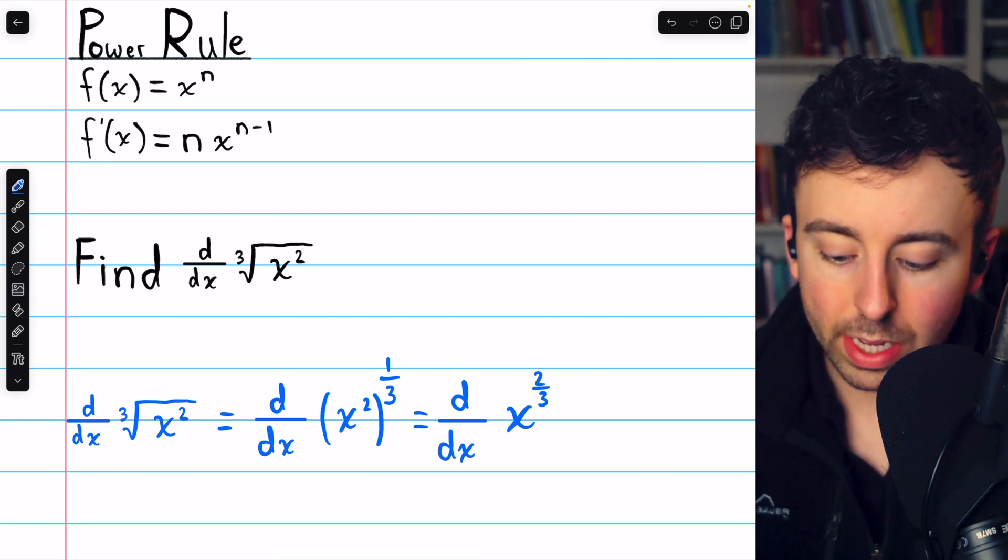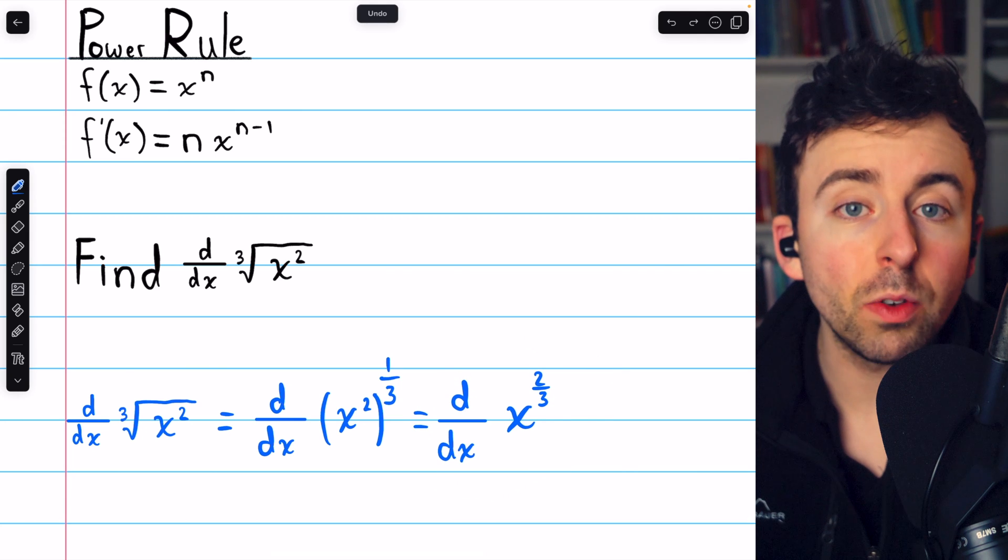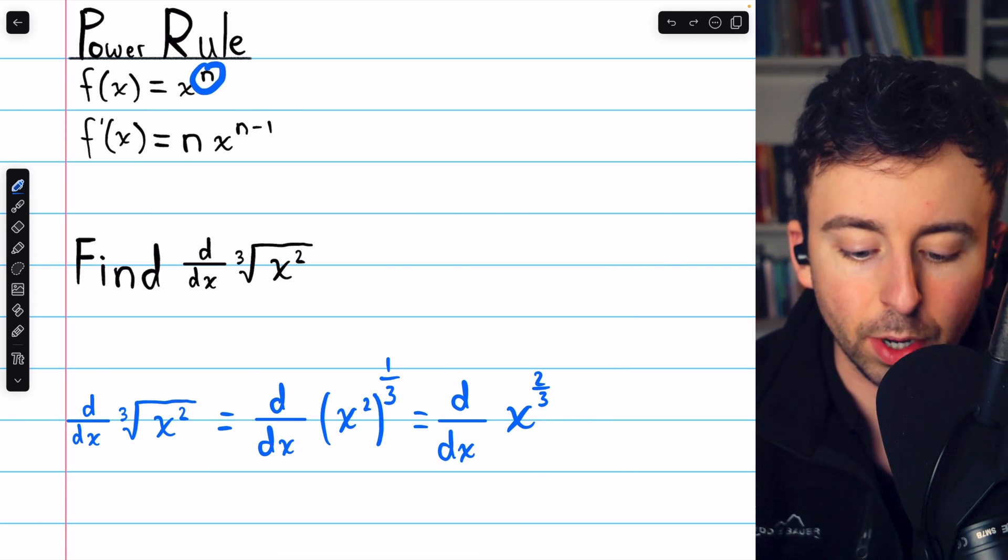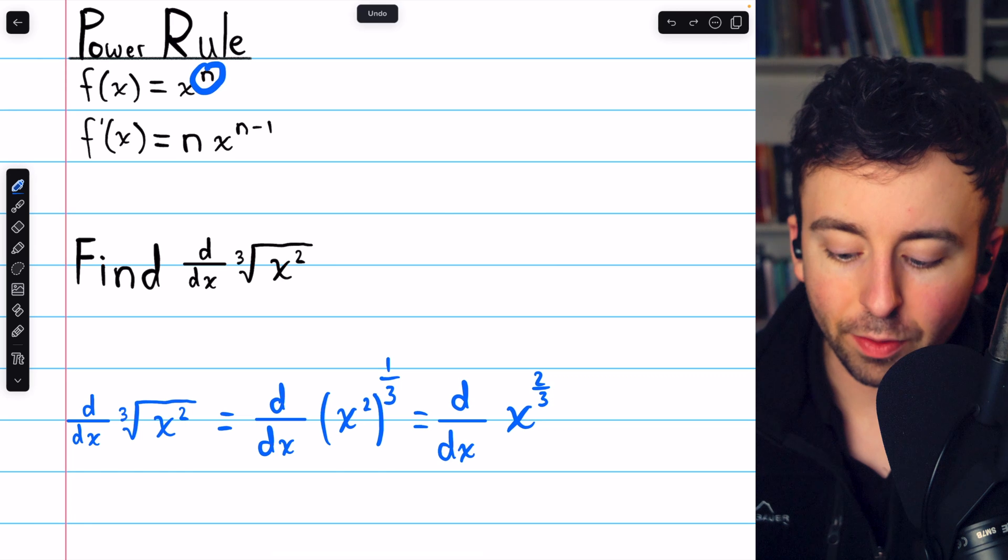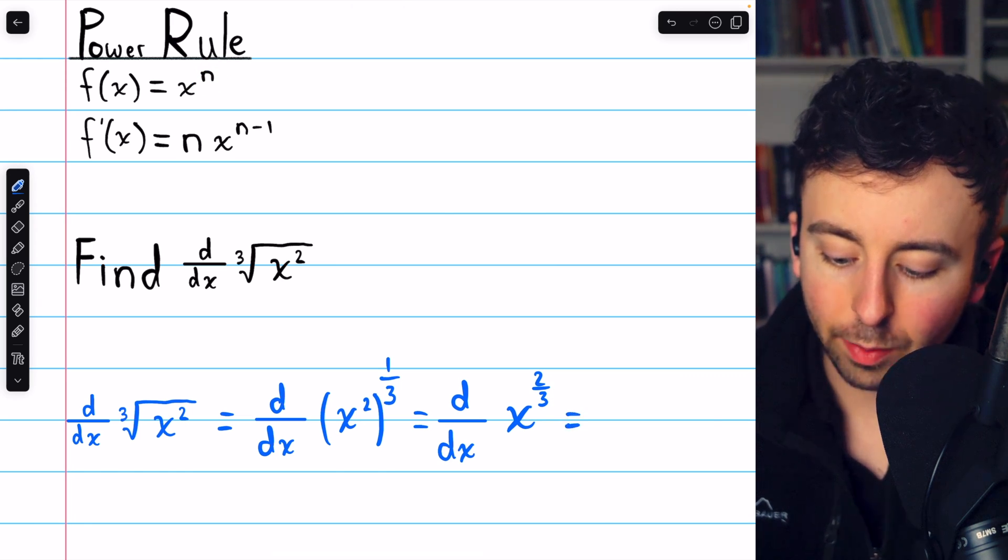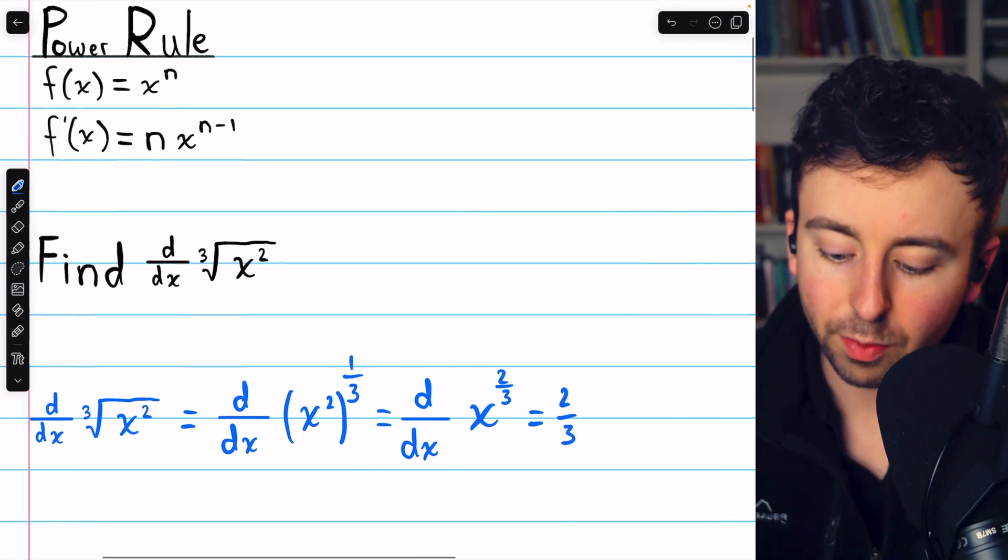And at this point, we can evaluate the derivative by using the power rule, which tells us we'll need to bring that exponent down as a factor. So we're going to have two-thirds in front as a factor.